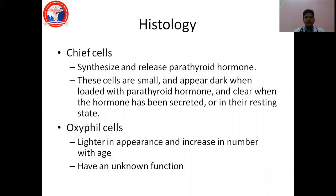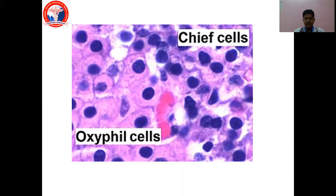Histologically, the parathyroid gland consists of chief cells and oxyphil cells. Chief cells are the ones which synthesize parathyroid hormone. These cells are small and appear dark because they are loaded with parathyroid hormone, and when they secrete they become clear. Oxyphil cells are larger and lighter in appearance but their exact function is not known.